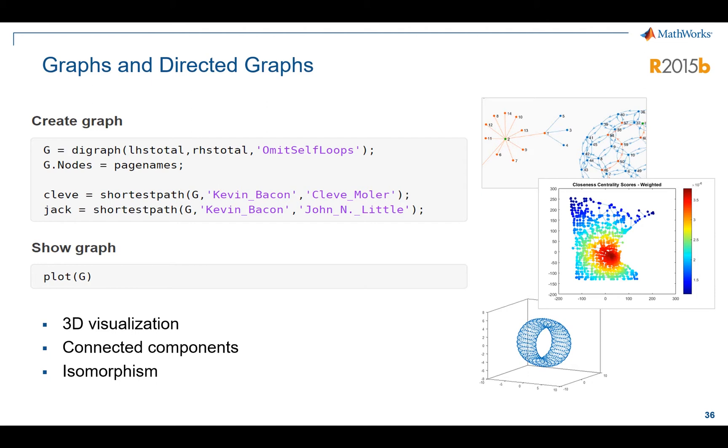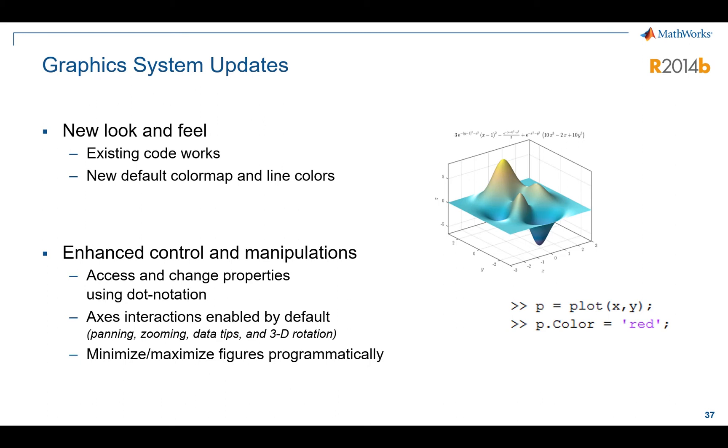This has been around for a little while but I bring it forward because it's not often talked about. The graphics system has been updated, and this includes things like dot notation to modify properties. So instead of using set and get or some of the older syntax, now you can say things like p.color and change the color of a line or whatever property you're trying to modify. This is done because it makes the code more readable, and when you share that, people really understand exactly what you're doing.